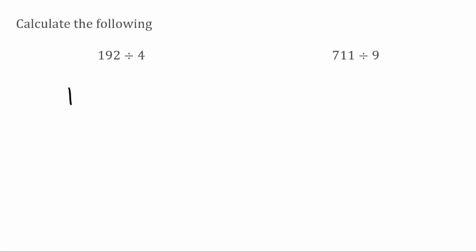For this first question, we've got 192 divided by 4. First of all, we want to see how many 4s fit into 1. We can't fit any 4s into 1, so we're going to bring in the next digit. So now we want to see how many 4s fit into 19. Well, 4s will go into 19 four times because 4 times 4 is 16. So now I'm going to take that away from the 19. So 19 take away 16 leaves me with 3.